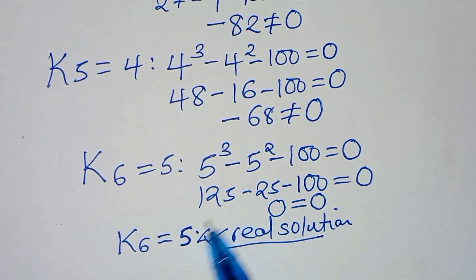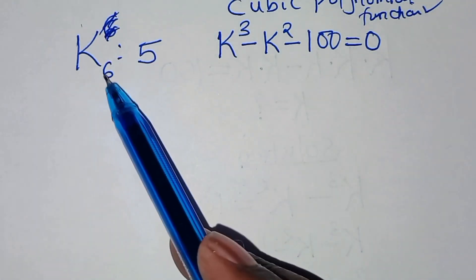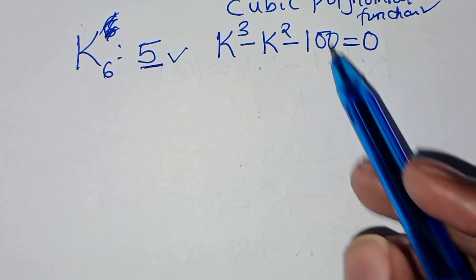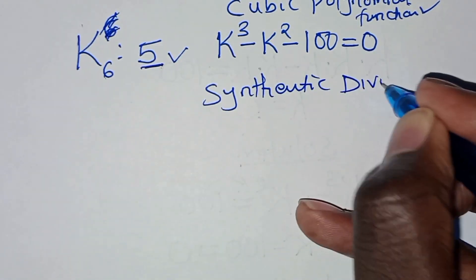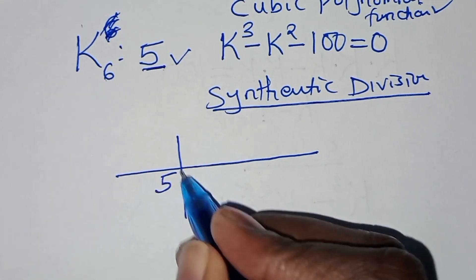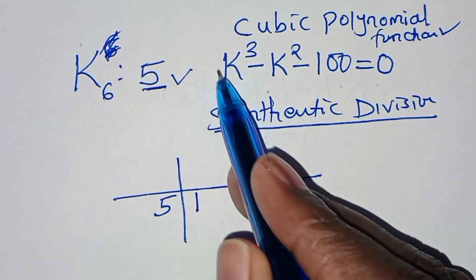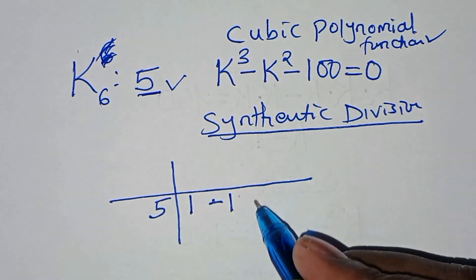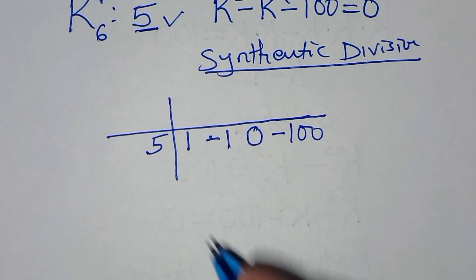To find the other values of k, we apply synthetic division. Since k=5 satisfies the equation, we write down the coefficients of the cubic: 1 for k³, negative 1 for k², 0 for k (since there is no k term), and negative 100 as the constant.